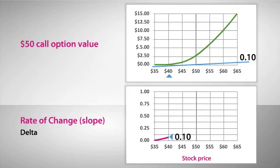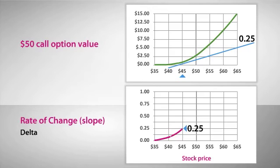At a higher stock price, say $45, the slope or delta begins to rise. Now the option moves up or down by about $0.25 for every $1 movement in the price of the stock.